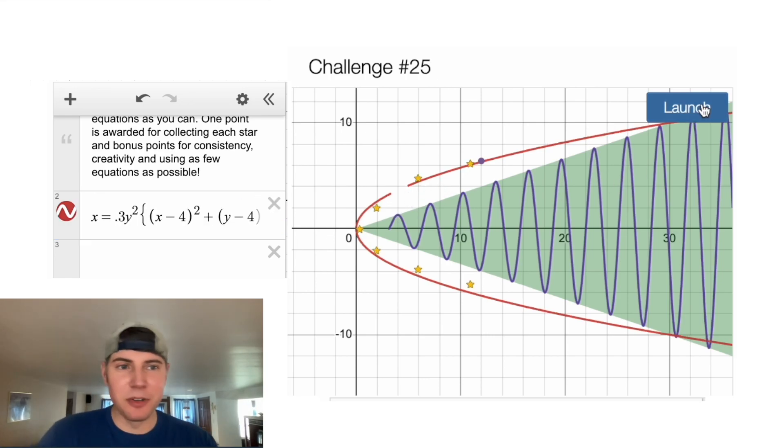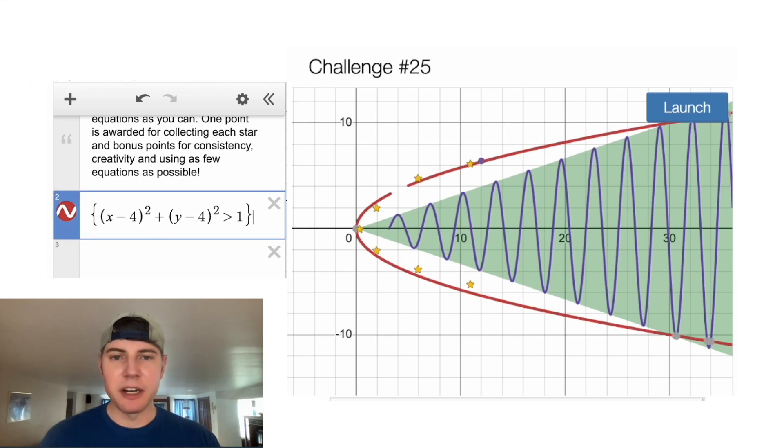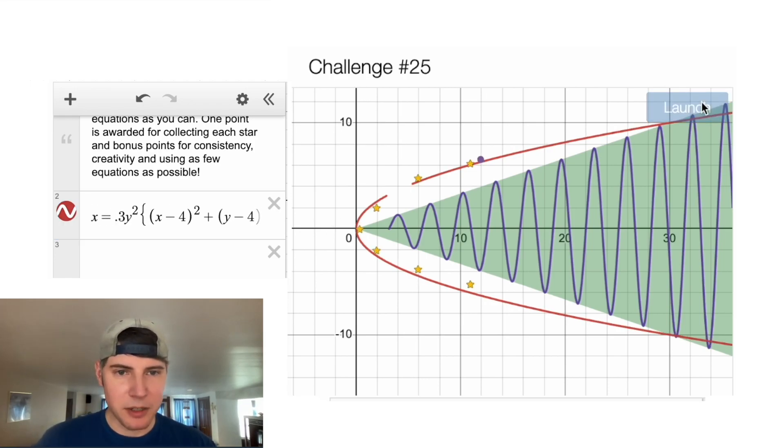So now if we hit launch, hopefully it'll hit all of our stars. And it doesn't, but that's okay. We can just make the circle a little bit bigger. We'll go inside here, find our circle. Let's make the radius a little bit larger than 1. Let's change the 1 into a 2. That might be enough.